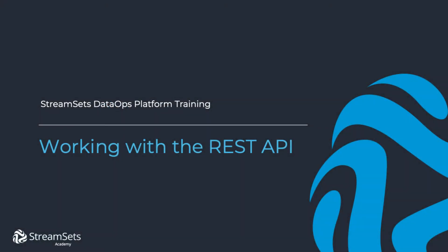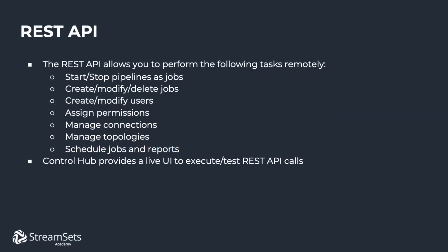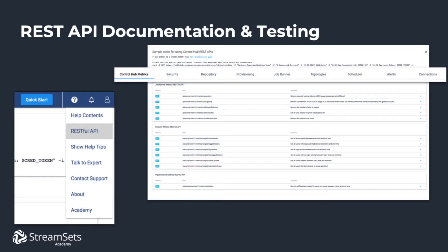In this lesson we're going to learn how to work with the REST API. The REST API allows us to interact with the StreamSets platform using a REST client such as the command line curl, programmatically, or other tools that can make REST calls. The REST API includes starting and stopping pipelines via the Job Runner API, creating, modifying, and deleting jobs, creating and modifying users and groups, assigning permissions, managing connections, and more.